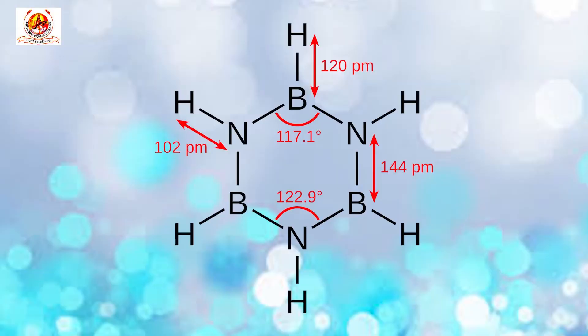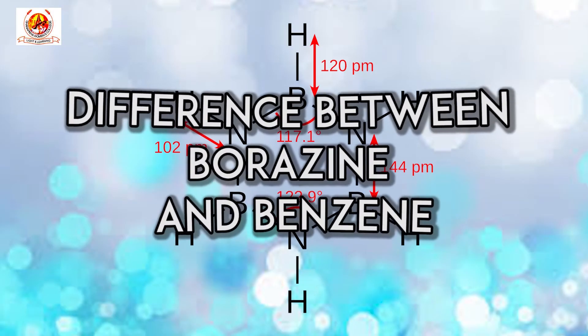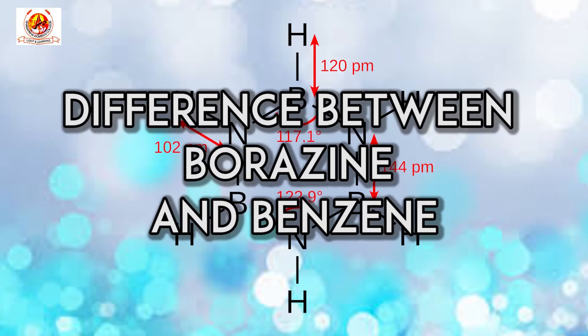The fifth property: borazine may be hydrogenated to produce the saturated compound cyclohexane analog. Hydrogenation of borazine results in polymeric materials of indefinite composition. Let us discuss the difference between borazine and benzene.